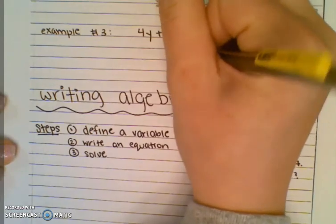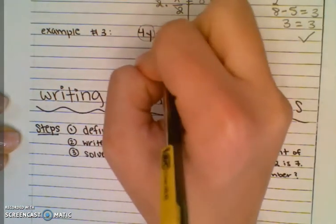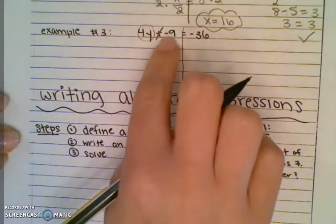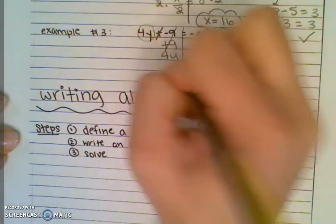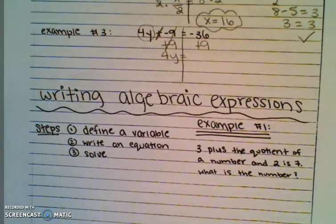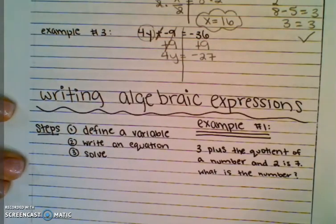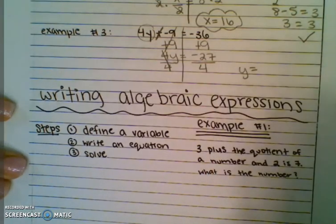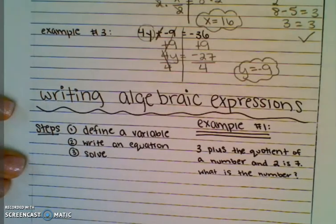Our last one — draw your line down the middle. My 4y is what I'm getting to last. This is plus negative 9, which is the same thing as minus 9. So the opposite of minus 9 is plus 9. So 4y — because those cancel — is going to equal negative 36 plus 9, which gives you negative 27. If you're not sure about the negative, use your calculator. 4 is being multiplied by y, so I need to divide by 4. So y equals negative 27 divided by 4, which is negative 9.